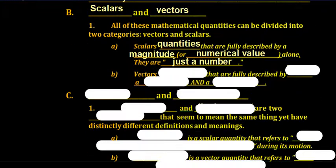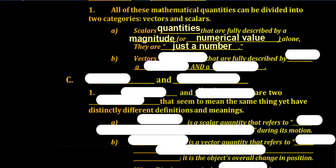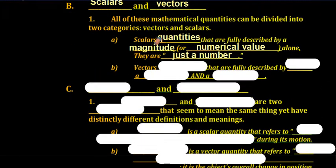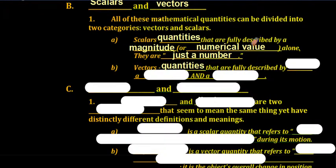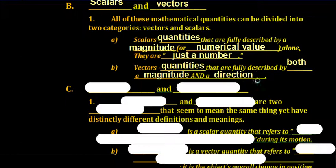Vectors, on the other hand, when you start dealing with positives and negatives, are more affected because vectors are quantities that are fully described by both a magnitude and a direction. The positive and negative, when dealing with a vector, tends to imply the direction.